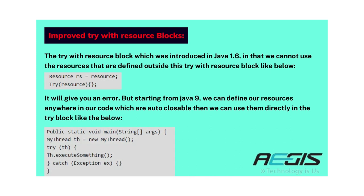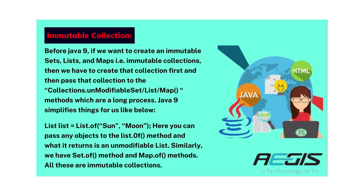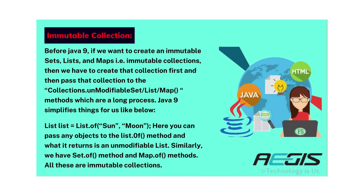Next is the improved try-with-resources block. The try-with-resources block was introduced in Java 1.6. In that version, we could not use resources defined outside the try-with-resources block — it would give an error. But starting from Java 9, we can define our auto-closable resources anywhere in our code and use them directly in the try block. Next is immutable collections. Before Java 9, to create immutable sets, lists, and maps, we had to create the collection first and then pass it to Collections.unmodifiableSet/List/Map(), which was a long process.